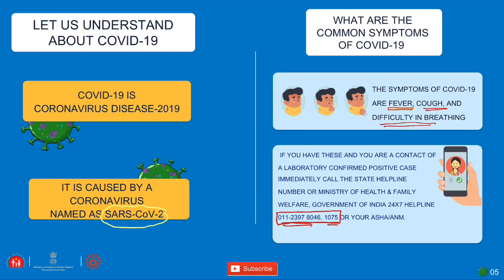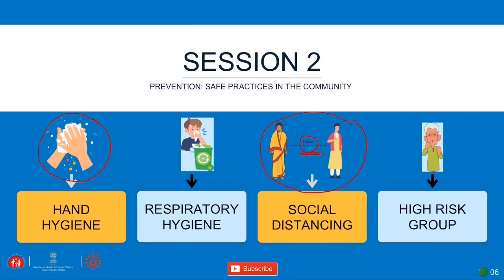Session 2 covers hand hygiene, respiratory hygiene, and social distancing. High-risk groups are discussed, along with the minimum distance required for social distancing — at least one meter. For respiratory hygiene, when you sneeze or cough, do it into your elbow, not in the open air, and carry a handkerchief. Prevention is better than cure — stopping spread confines the disease to one area.